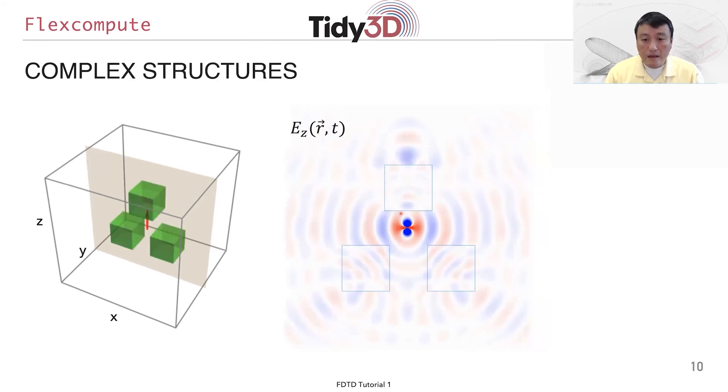So, as the last example of this tutorial, we will put a dipole source, again, the same computational cell, but we will put also 3 dielectric blocks. And here is the movie of the electric field distribution. And you can see how the field now is very strongly perturbed by the presence of these blocks.